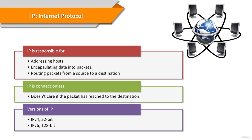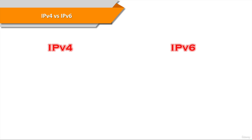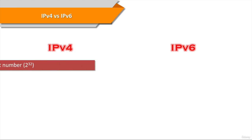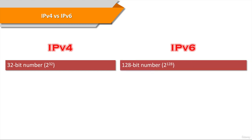IP addresses are made up of binary values and drive the routing of all data over the Internet. IPv4 addresses are 32 bits long, and IPv6 addresses are 128 bits long. Right now we're going to see each of the versions in detail, but before we move on, let's compare the main features of each version. IPv4 is a 32-bit address, and IPv6 is a 128-bit address.